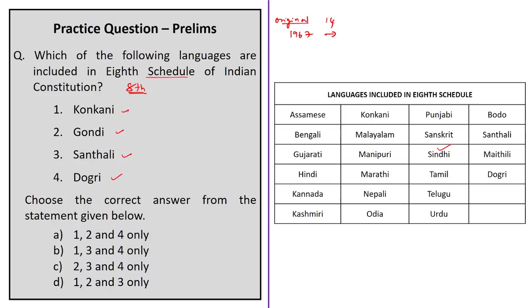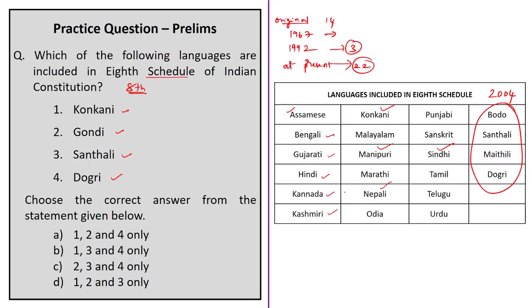At present there are 22 languages in the Eighth Schedule: Assamese, Bengali, Gujarati, Hindi, Kannada, Kashmiri, Konkani, Malayalam, Manipuri, Marathi, Nepali, Odia, Punjabi, Sanskrit, Sindhi, Tamil, Telugu, Urdu, Bodo, Santali, Maithali, and Dogri. So Gondi is not included in the Eighth Schedule at present. Kindly notice that English is also not included in the Eighth Schedule of the Indian Constitution. Therefore, option B — 1, 3, 4 only — is the correct option.